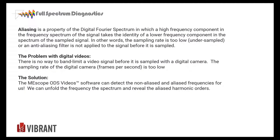A little summary on nomenclature: aliasing is the property of a digital Fourier spectrum where a high-frequency component in the spectrum takes the identity of a lower-frequency component in the spectrum of the sampled signal. In other words, the sampling rate is too low. One of the classic examples is western movies on TV with wagon wheels — the wheel moves at a certain frequency and the film is processed at a certain frequency, like 30 frames per second, to produce smooth motion for the human eye.